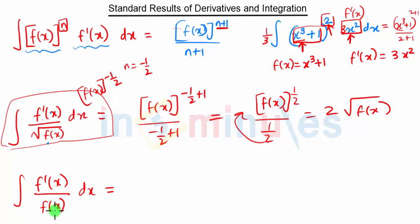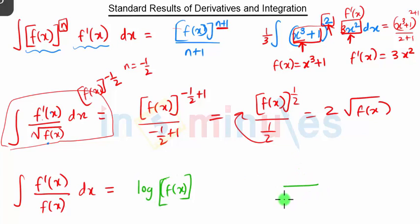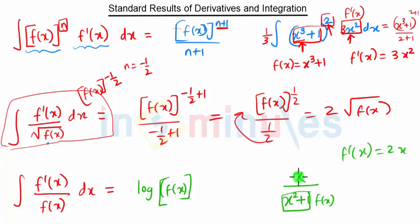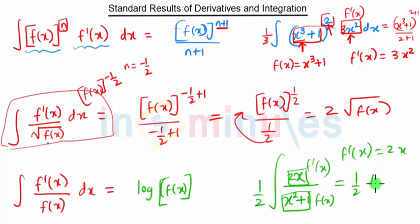Next, the integration of f'(x)/f(x) is directly log f(x). For example, for the integration of x/(x²+1): taking f(x) = x²+1, f'(x) = 2x. Since the numerator is x (not 2x), we multiply and divide by 2. The integration then becomes (1/2) log(x²+1).